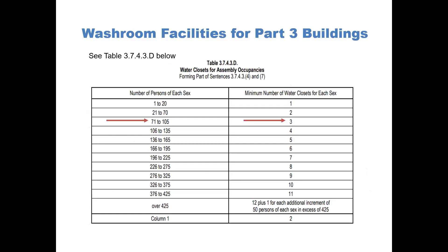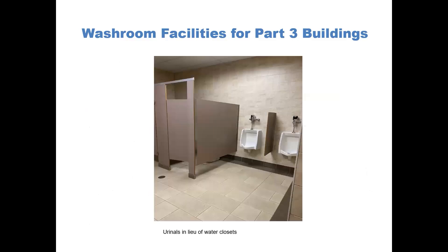We can have a look at the table. In 3743, you can see that the number of persons of each sex is 71 to 105, and as a result you would need three water closets per sex, for a total of six water closets. In this photograph, you can see the urinals are in lieu of the water closets.